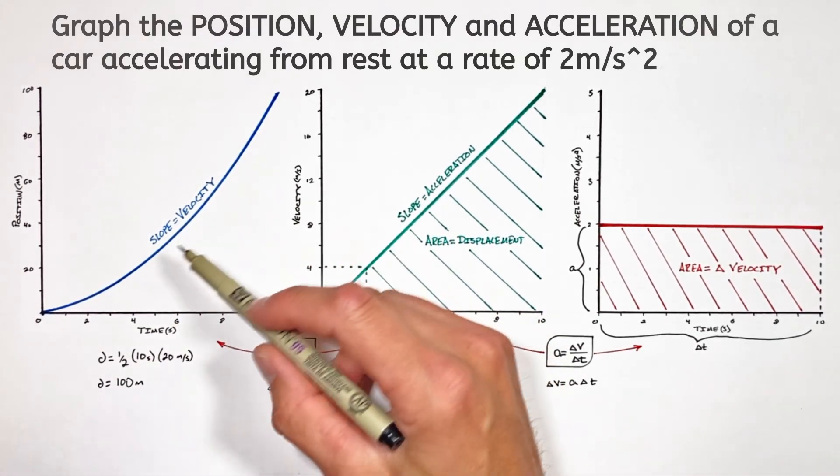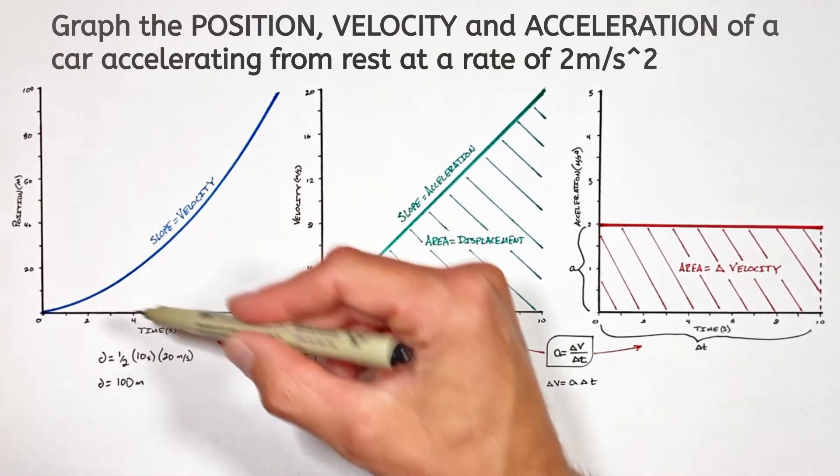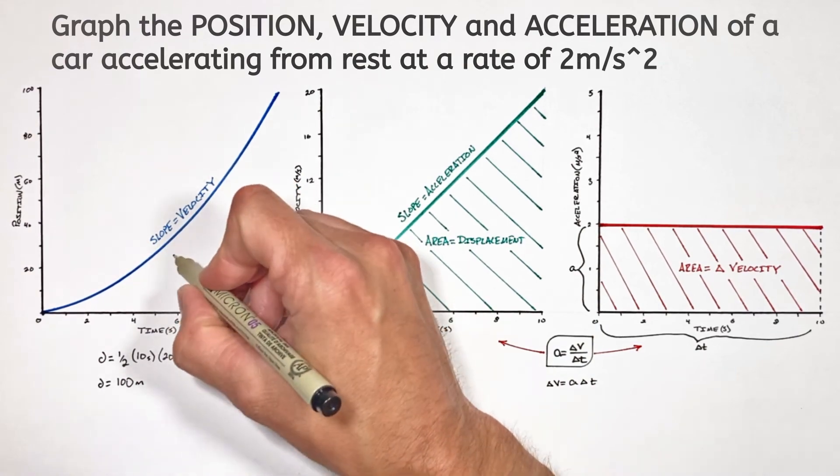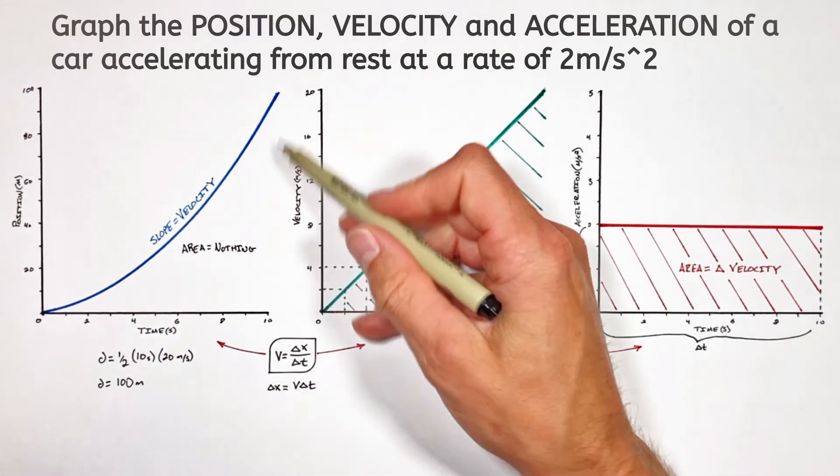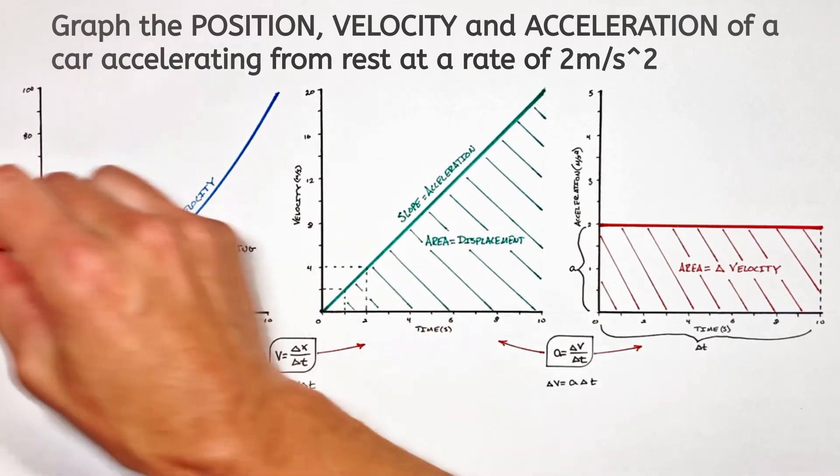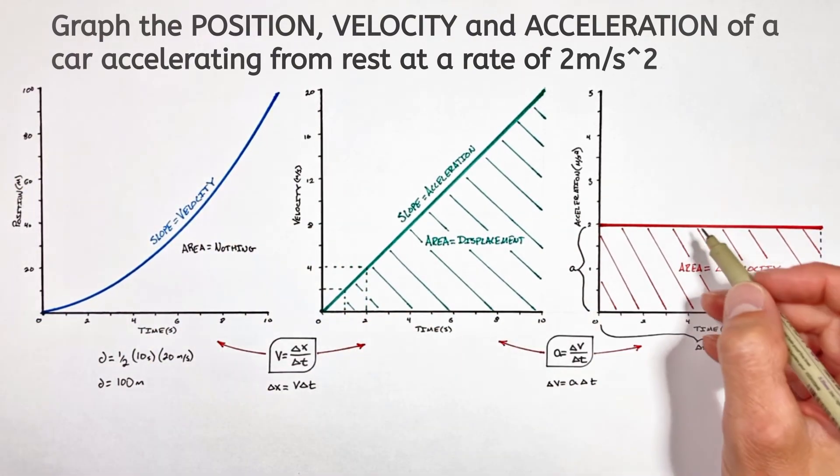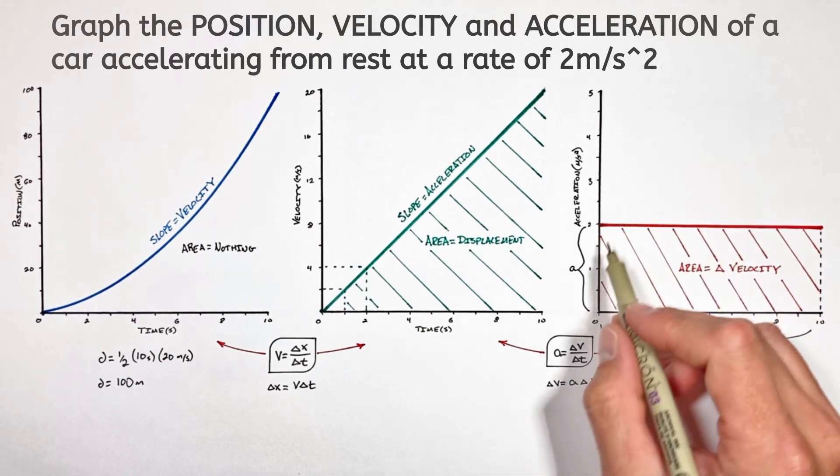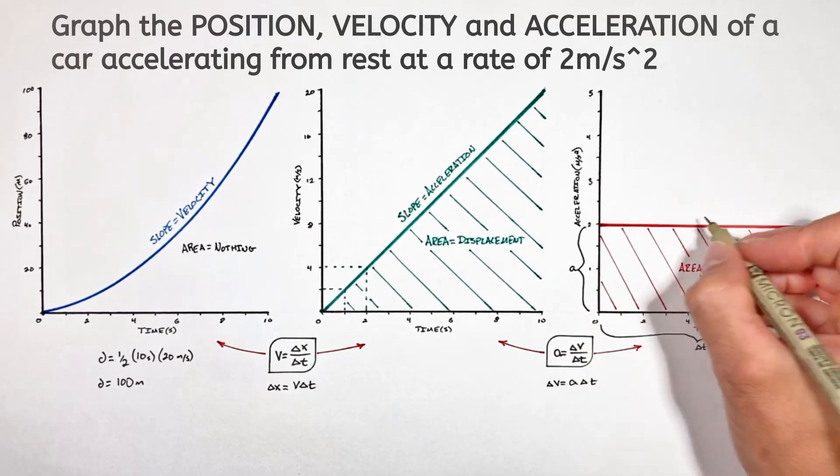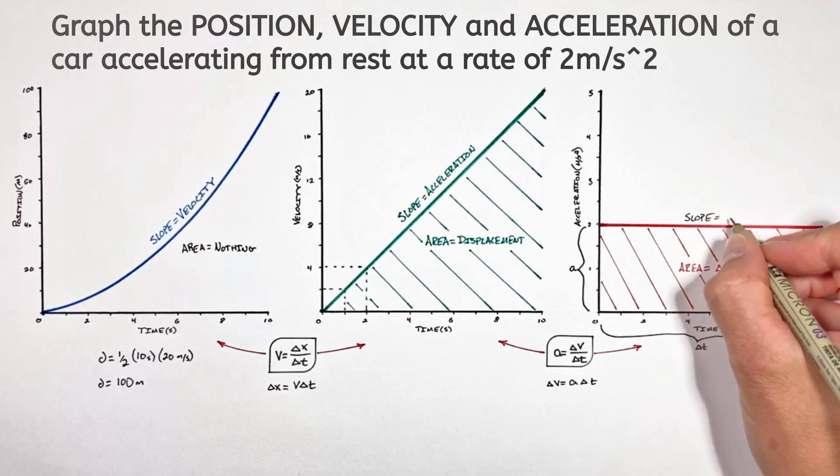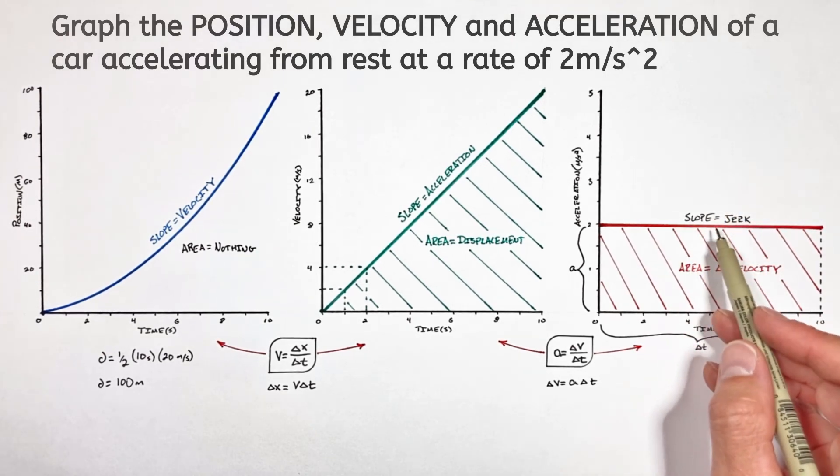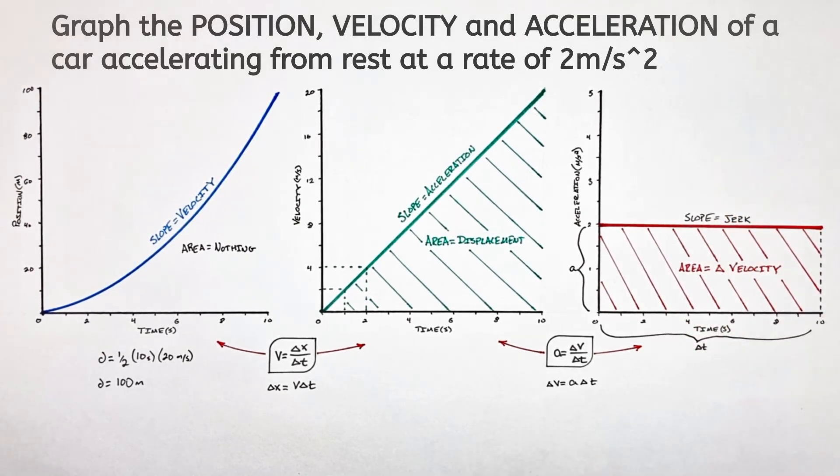Now I often get the question, what does the area under the curve of a position versus time graph mean? And ultimately, it doesn't mean anything. There's nothing else over here that we can graph. But on a similar note, if you really want to nerd it up, the slope of an acceleration versus time graph is what we call jerk. But that's not really something we need to worry about in an introductory physics course.